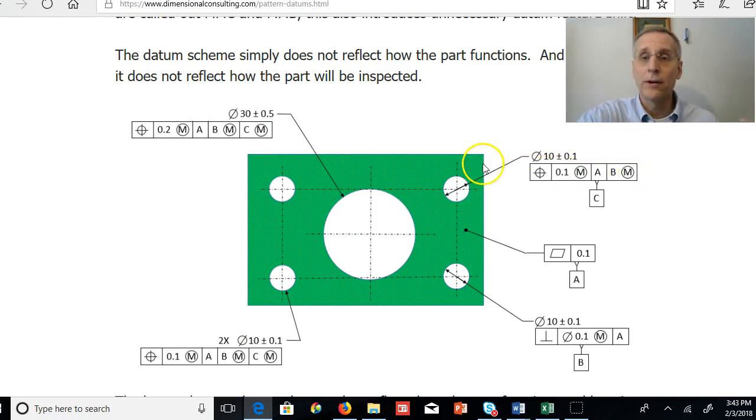So the way the part functions, the way the part is manufactured, and the way the part is going to be gauged all say these four holes contribute equally, and these two holes are not more important than these two holes. So how should we dimension this part?